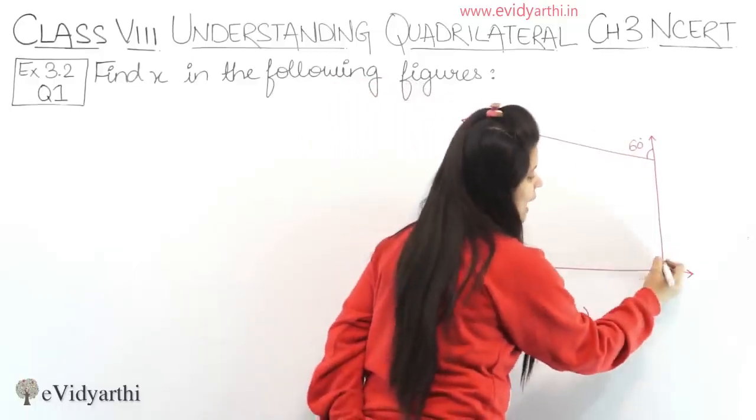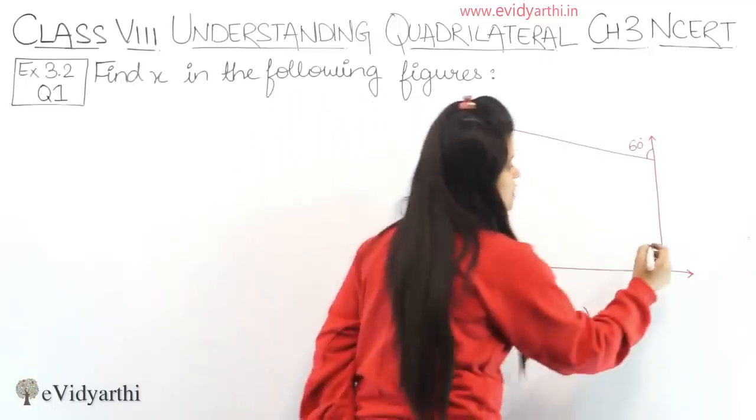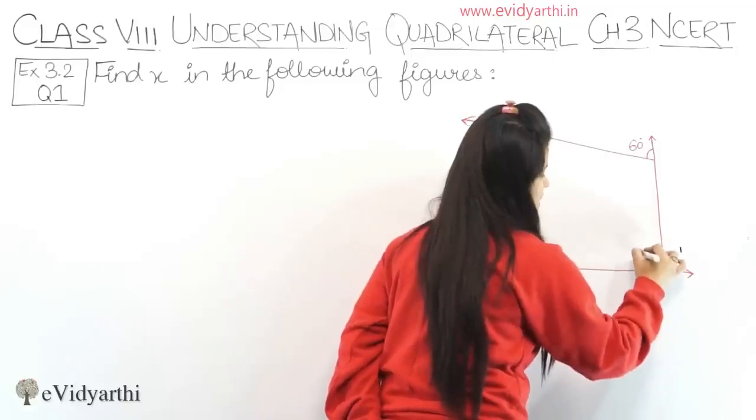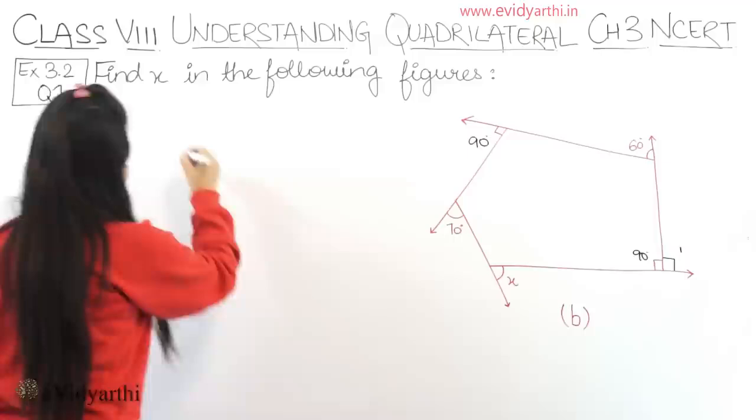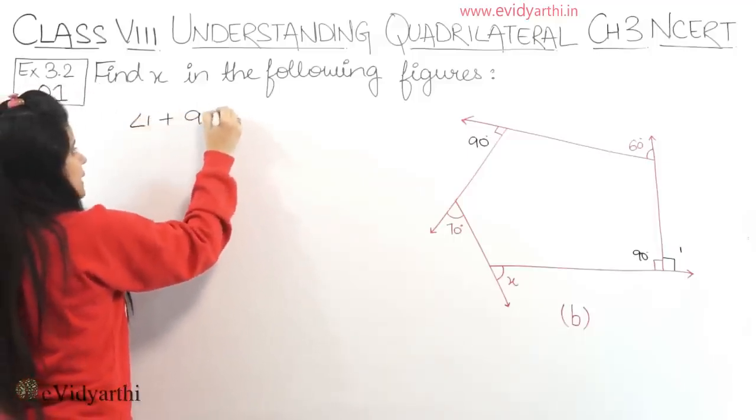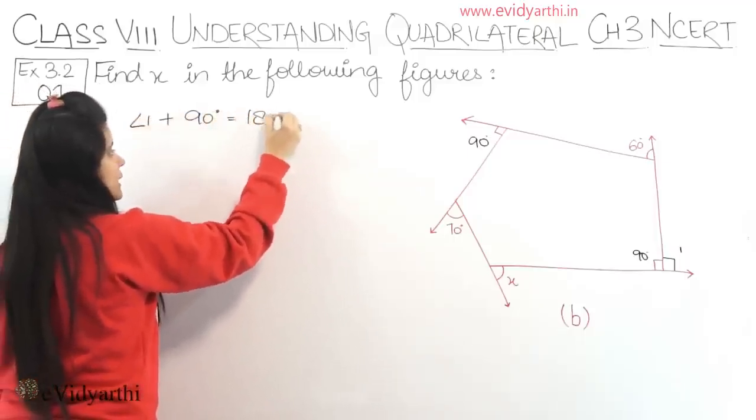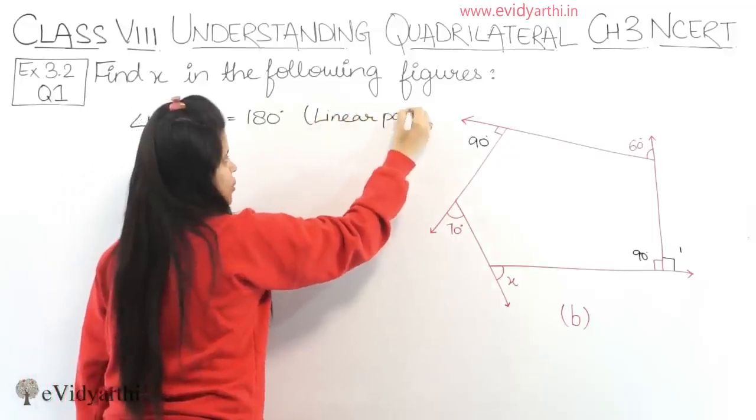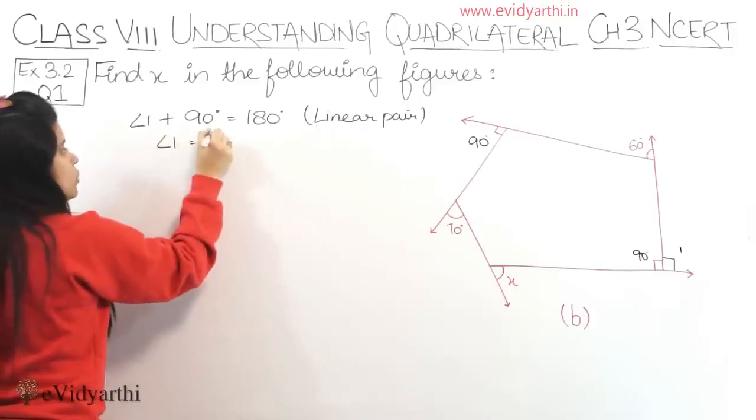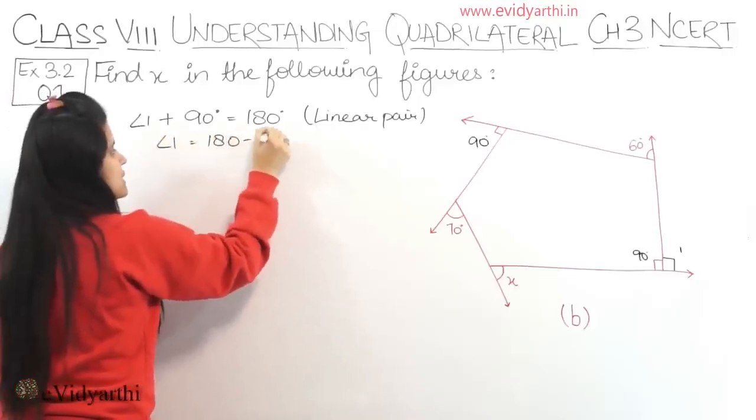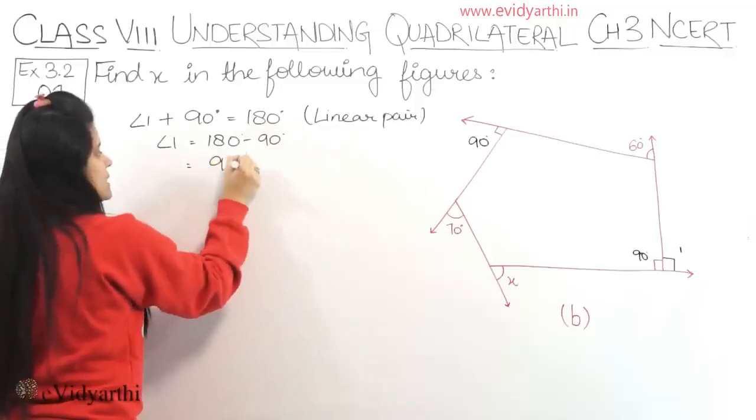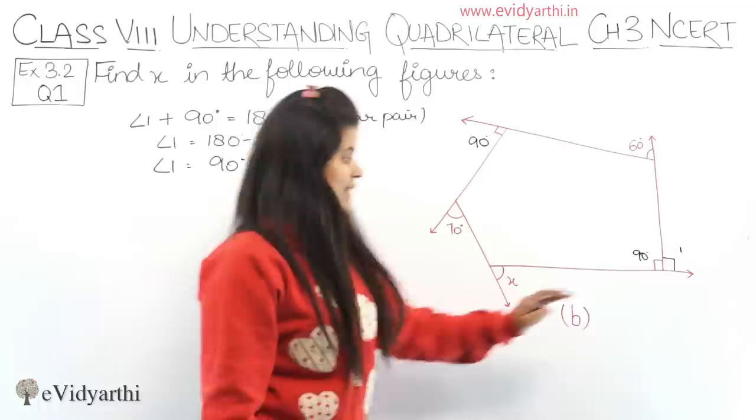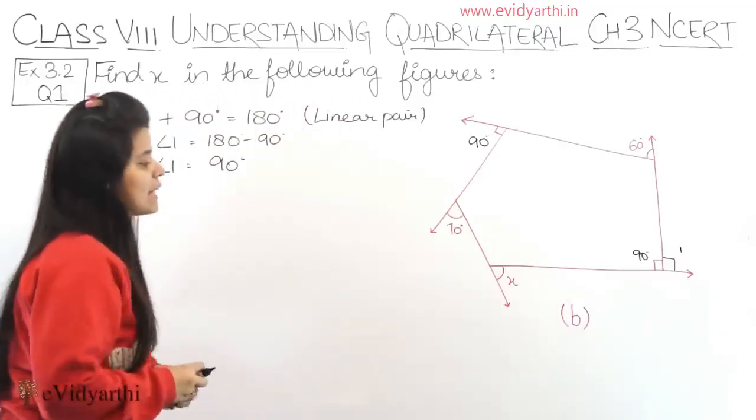Let's suppose the outer angle is not given. I will just take it as angle 1. If this is 90 degrees, so angle 1 plus 90 degrees equals 180 degrees. Why? Because they are forming a linear pair. So to find angle 1, that will be 180 minus 90. So 180 minus 90 is 90 degrees. This means angle 1 is also 90 degrees. Now here we have all the exterior angles.